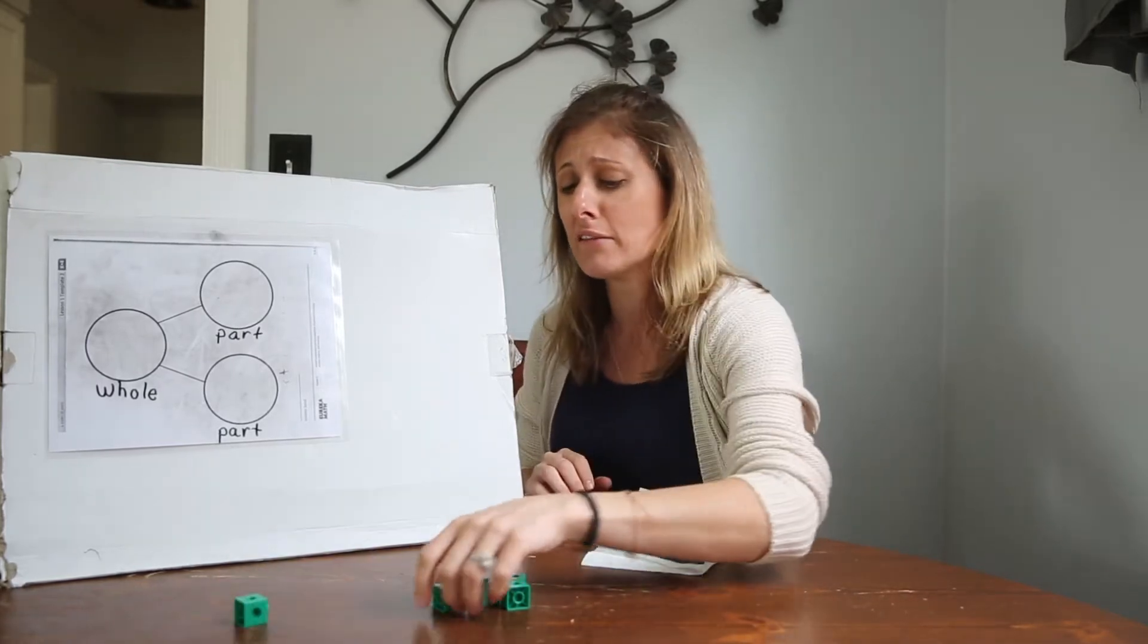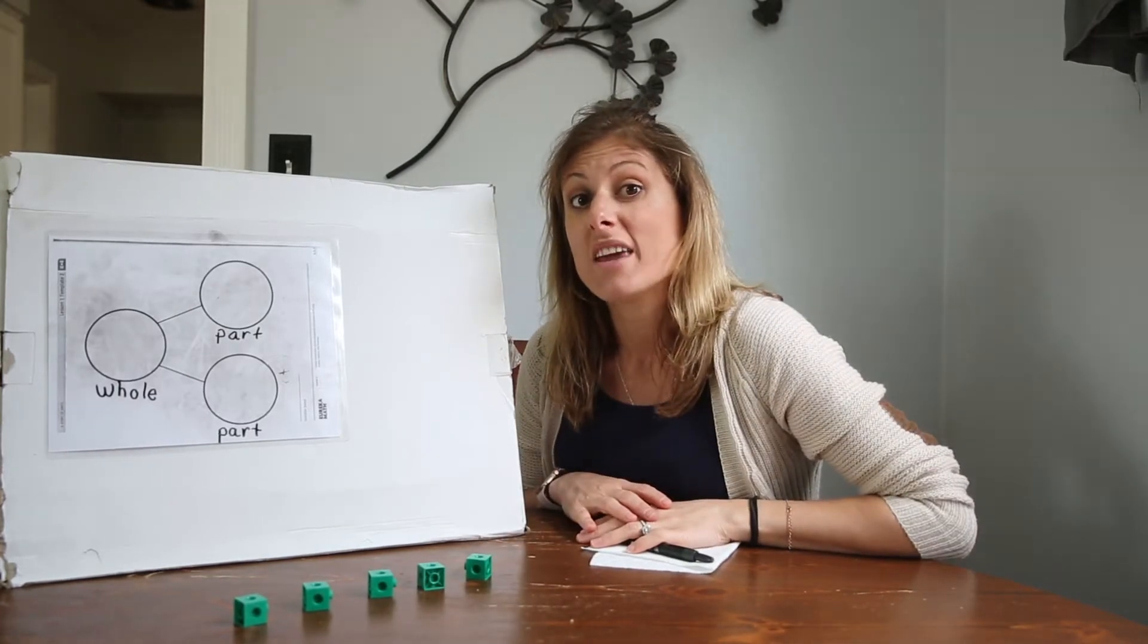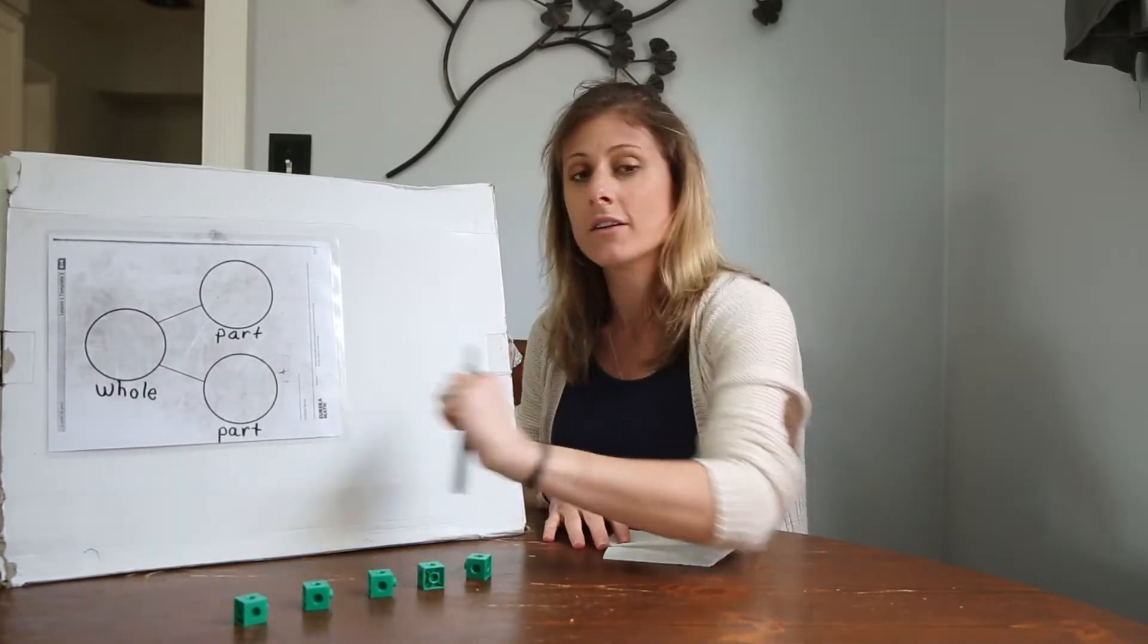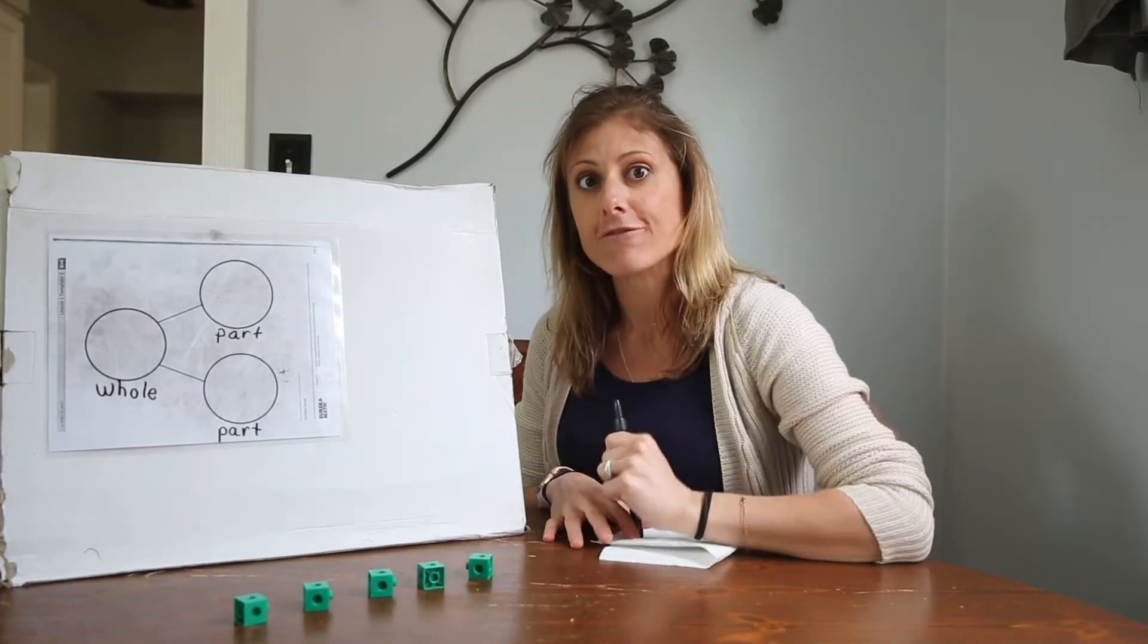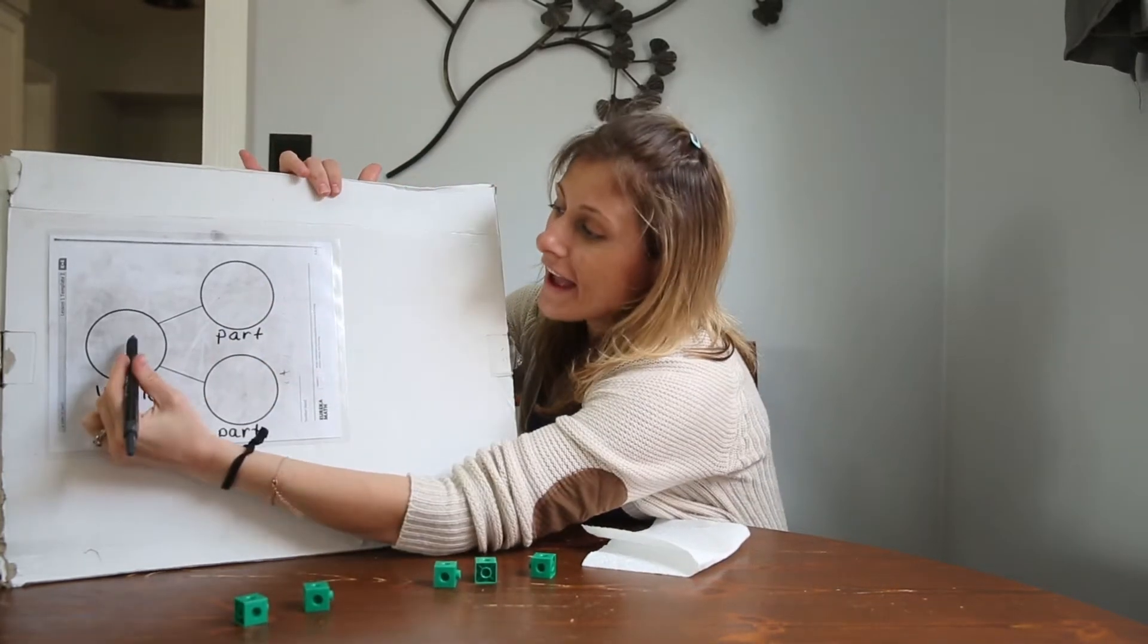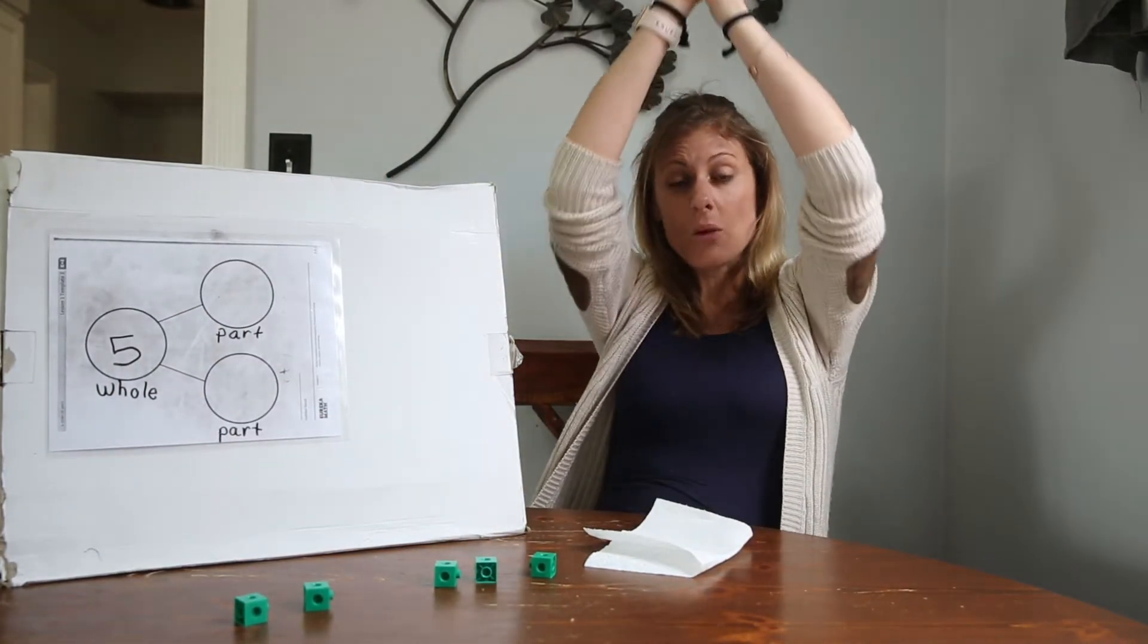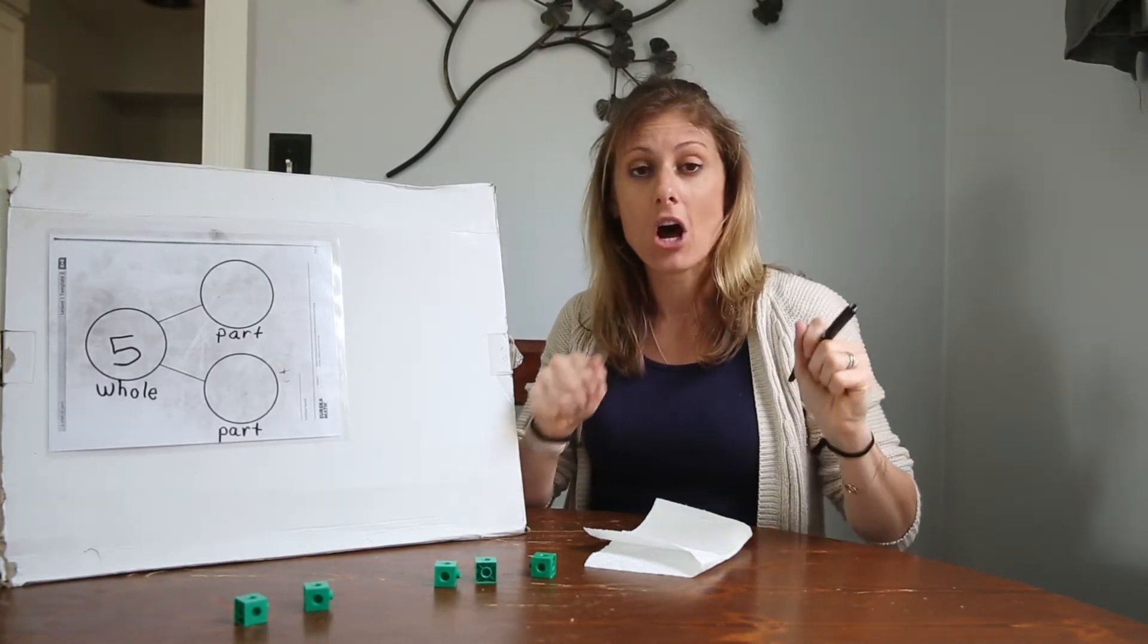So if we see some objects in front of us we can count them to find the whole number. Why don't you count these cubes with me? We have one, two, three, four, five cubes. And if we wanted we could write the number five where we see the whole. And then we could take the whole number and we can break it apart into two smaller numbers. Those are called the parts.